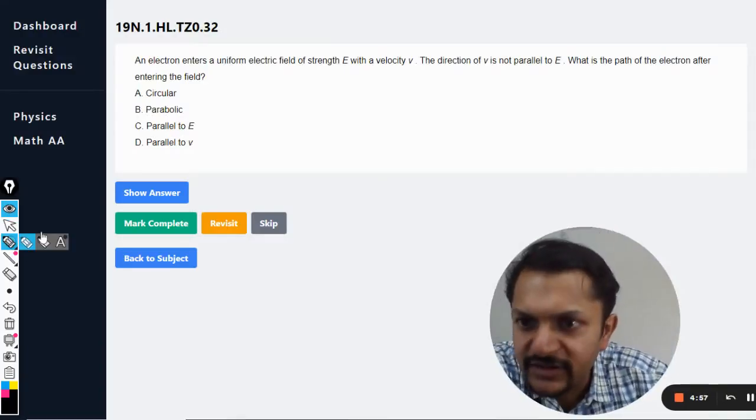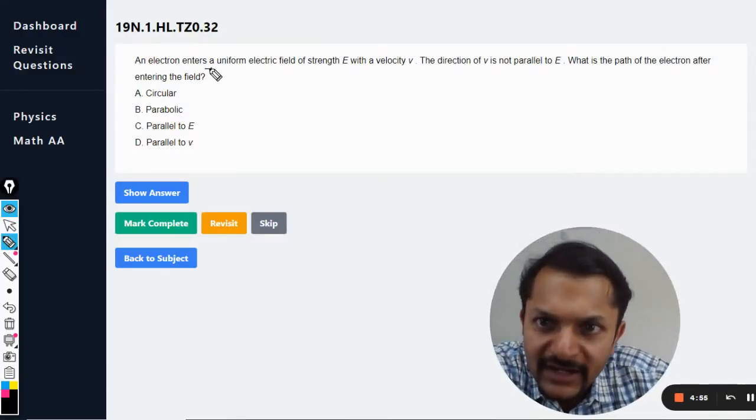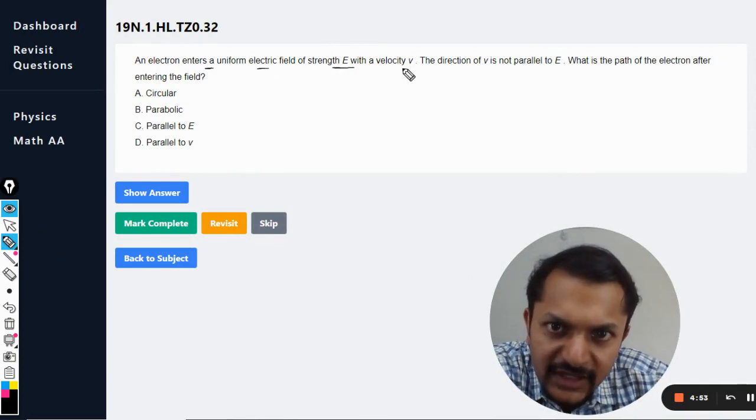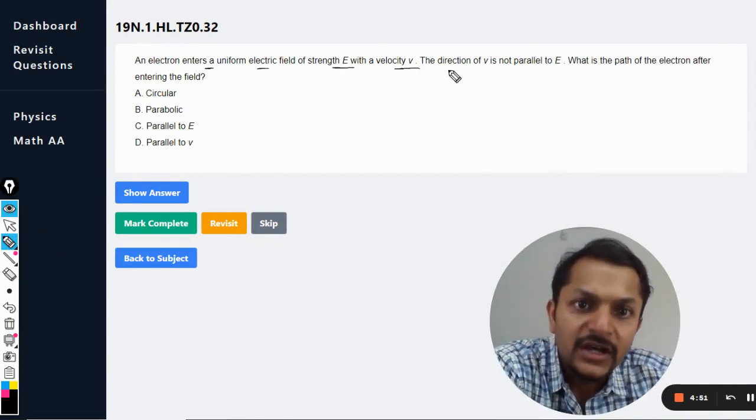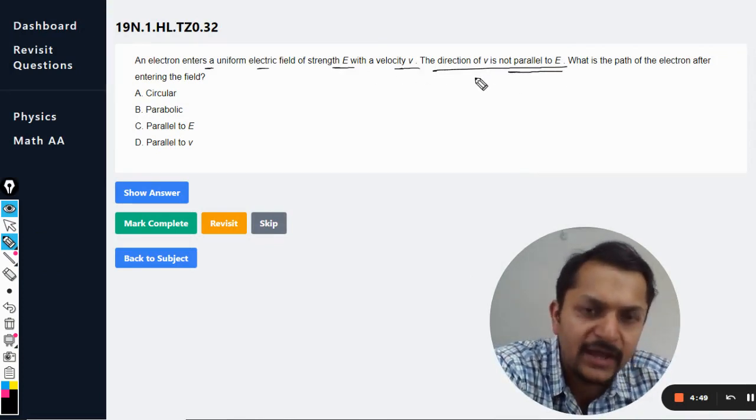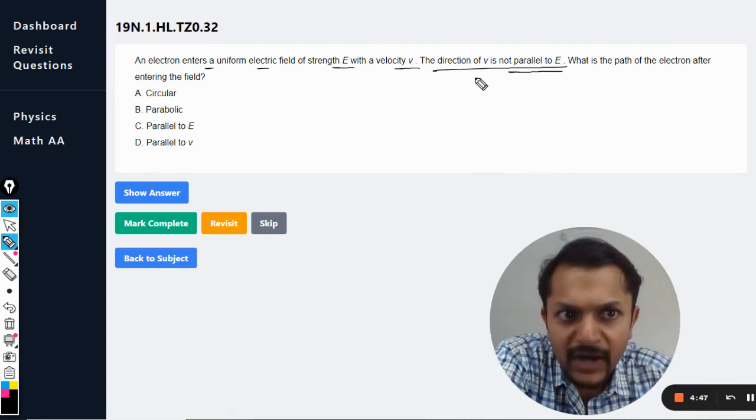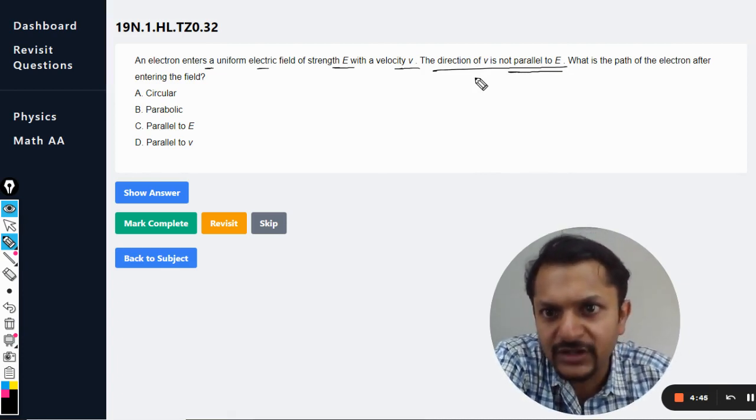Okay, dear students, let us see what is in this question. An electron enters a uniform electric field of strength E with a velocity V. The direction of V is not parallel to E. What is the path of the electron after entering the field?